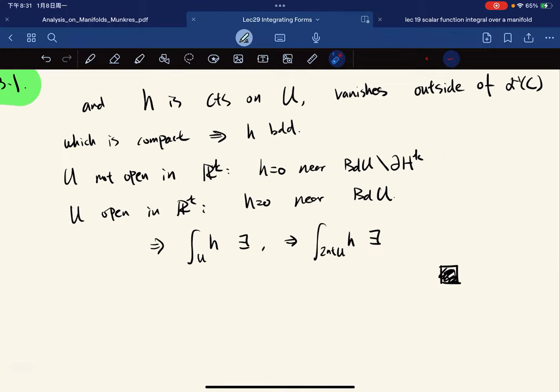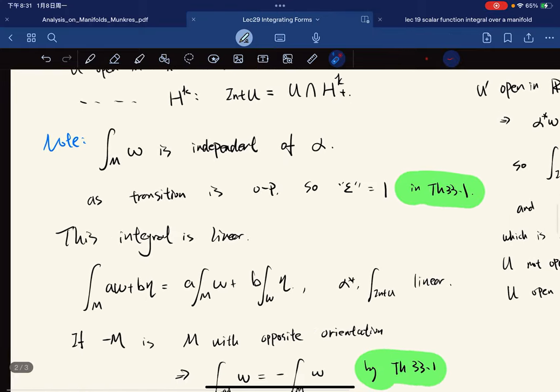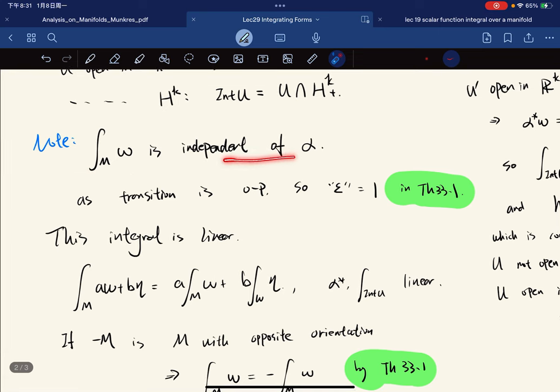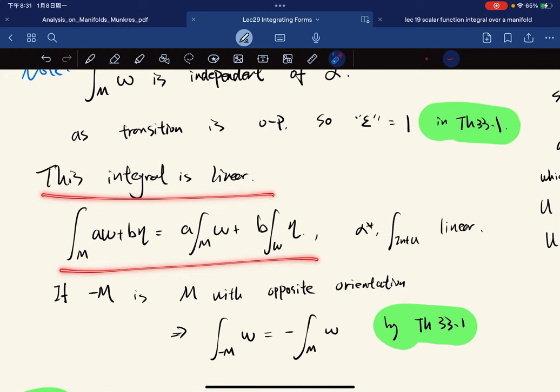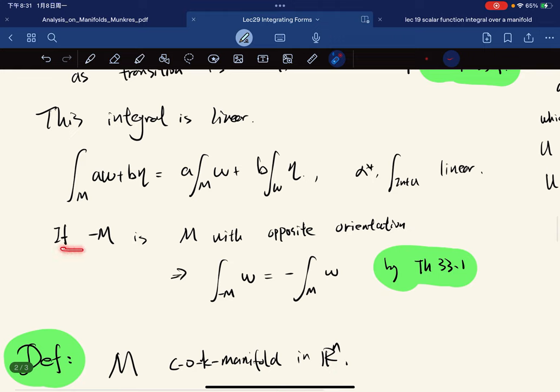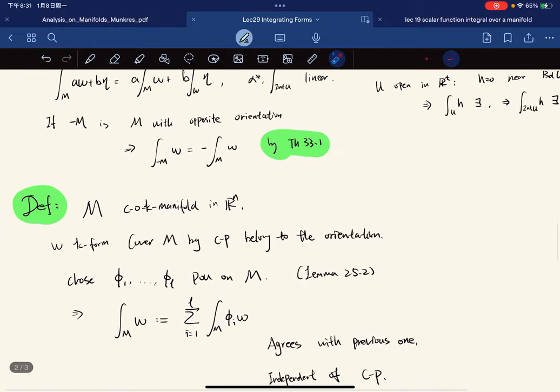Here we know that this exists, so this exists. Also, this is independent of the choice of coordinate patch because the transition is orientation preserving, so the sign ε equals one in Theorem 33.1. This is linear because these two are linear.